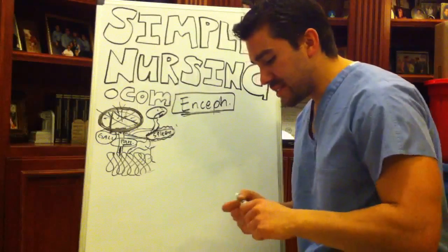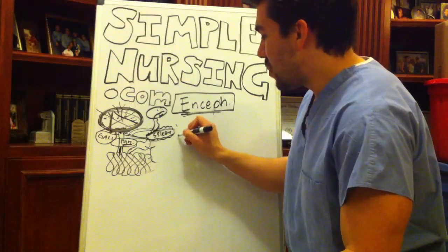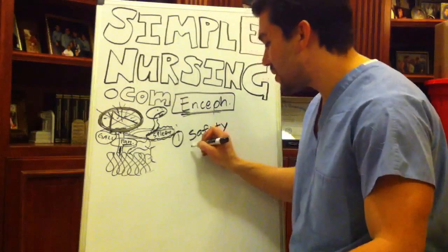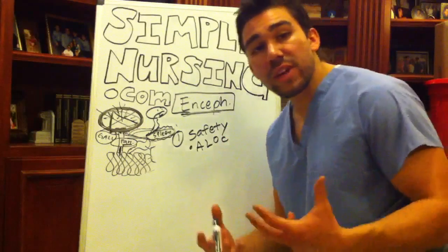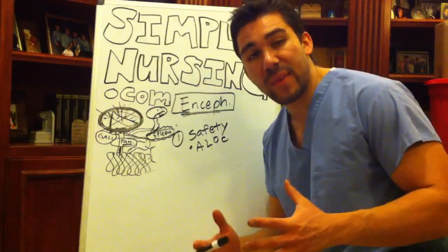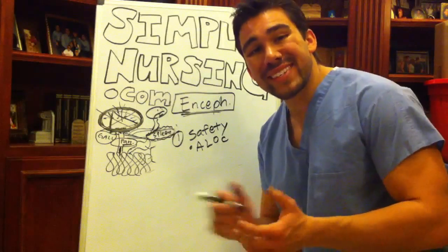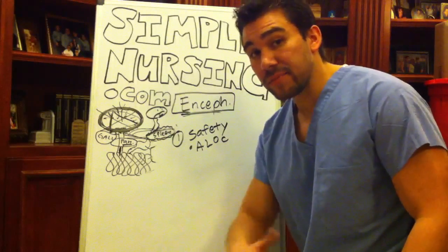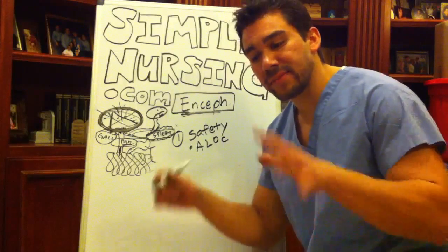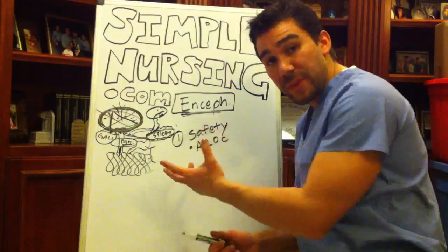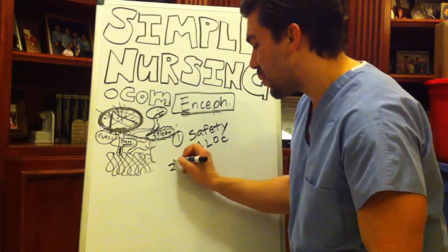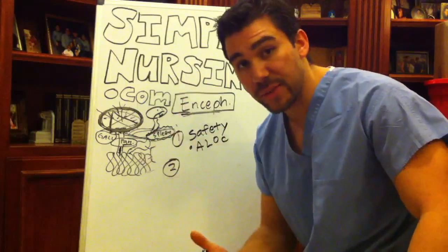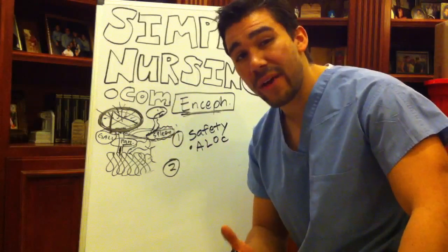Nursing consideration number one is safety. Your patient has altered level of consciousness. You want to make sure you're padding the side rails of the bed. You may want to use restraints with a sitter at the bedside — or many hospitals prefer having a family member or CNA sit at the bedside to promote safety. The last thing the hospital wants is an altered patient getting out of bed, hurting themselves, creating liability as well as a poor therapeutic outcome.